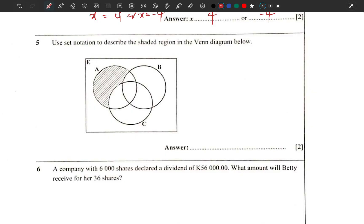So we are using set notation to describe the shaded region. How do we do it? Check what has not been shaded. The entire set B has not been shaded and the entire set C hasn't been shaded, and these two sets have been combined together, meaning B union C have not been shaded.